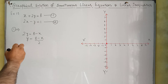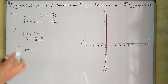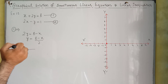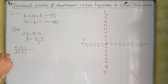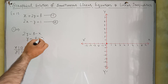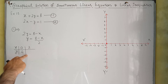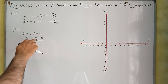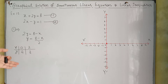Now we have to make a table because we need to find coordinates. If we substitute X equal to 0, then Y will be equal to 4. Similarly, if we substitute X equal to 2, that will become 8 minus 2 equals 6, and 6 over 2 will become 3.